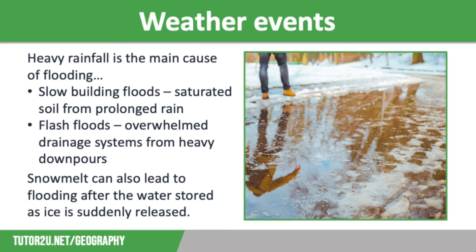In contrast, we have flash floods. These are caused by sudden heavy downpours of rain which overwhelm drainage systems, causing surface runoff. Flash floods rise quickly but also subside quickly as the water starts to infiltrate or drain away. Flash floods sometimes occur after a period of drought when the land has been baked hard, which prevents infiltration. In addition, sudden snowmelt can also lead to flooding after water stored as ice is suddenly released.